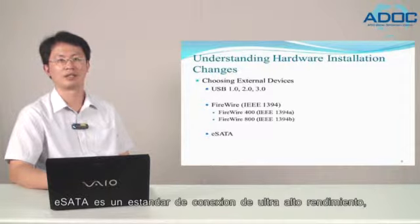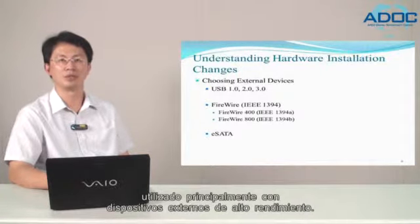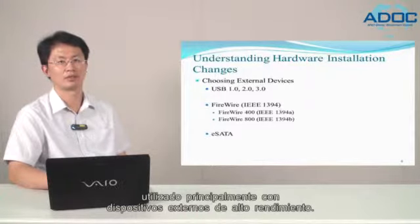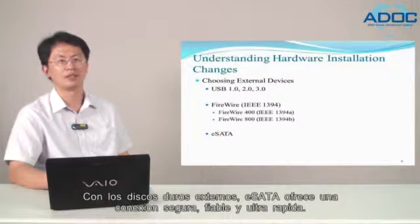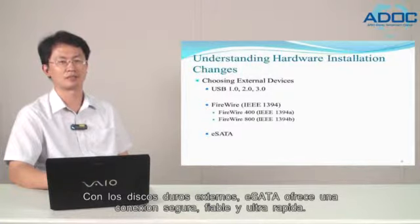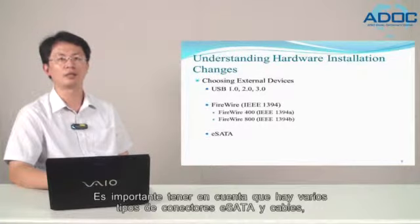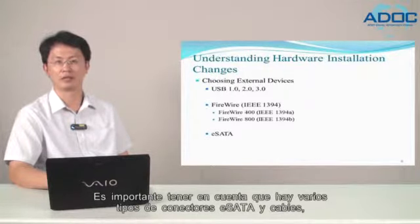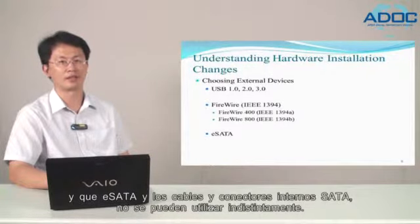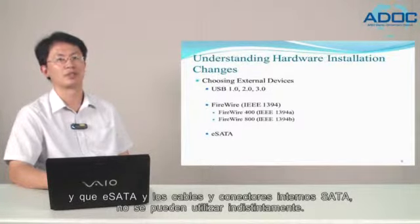eSATA is an ultra-high-performance connection standard, primarily used with high-performance external devices. With external hard drives, eSATA provides a secure, reliable, and ultra-fast connection. eSATA has maximum data transfer rates of up to 3000 Mbps. It is important to note that there are several types of external serial ATA connectors and cables, and that eSATA and internal serial ATA cables and connectors cannot be used interchangeably.